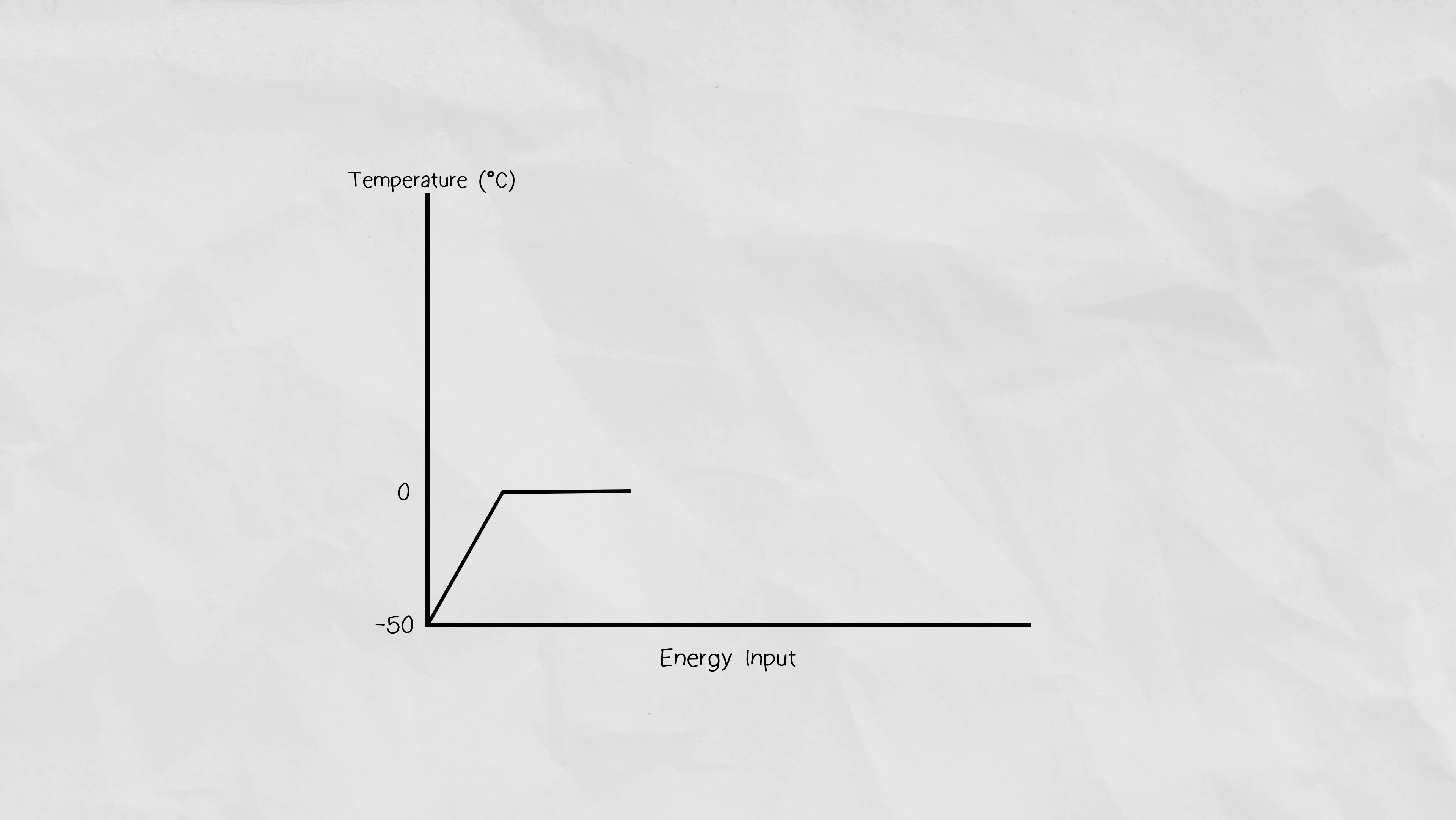As you add more energy, the temperature stalls for a bit and creates this flat line. This is because when a solid is melting, it's actually in a transitional solid-liquid state, and you can physically see that some of the ice is melting before the other parts. In this transition state, the temperature is constant.